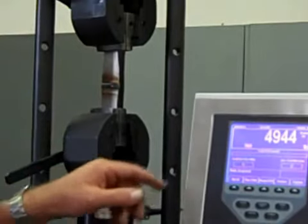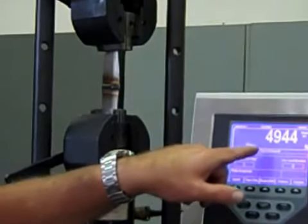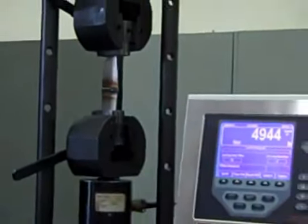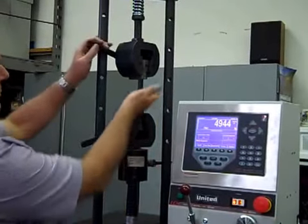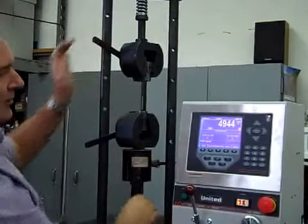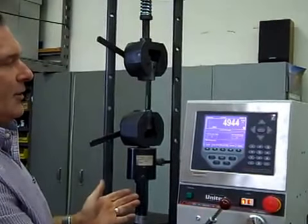All right. The sample is broken. It broke in the grips. 4,944 pounds, peak force. The machine is put in neutral. The sample is removed. The machine is returned back to zero.